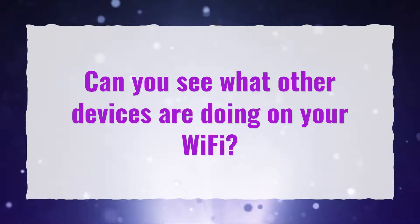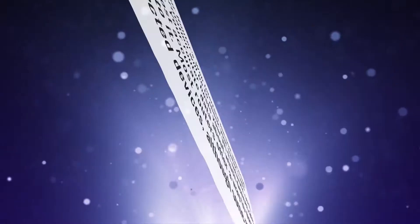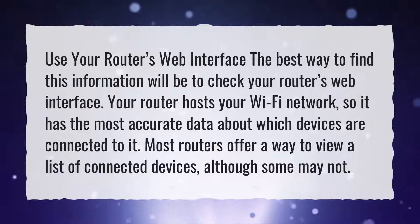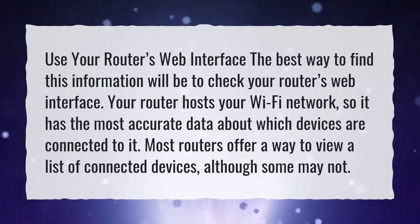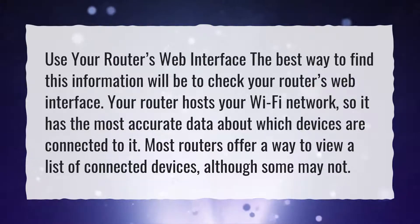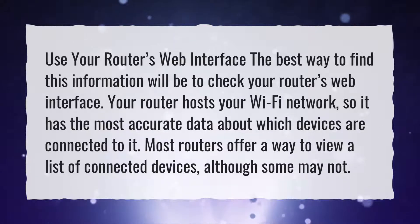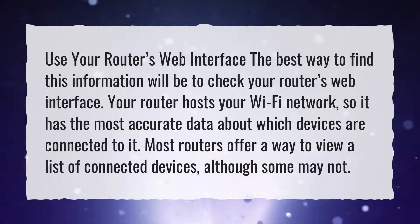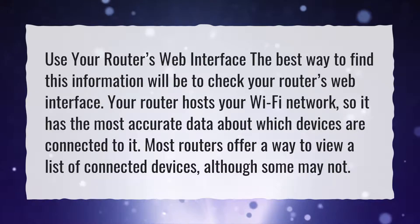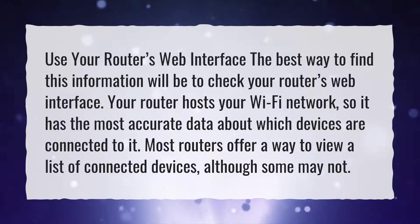Can you see what other devices are doing on your Wi-Fi? The best way to find this information is to check your router's web interface. Your router hosts your Wi-Fi network, so it has the most accurate data about which devices are connected to it. Most routers offer a way to view a list of connected devices, although some may not.